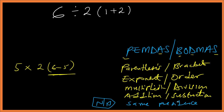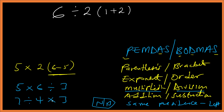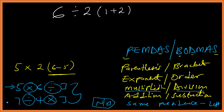Same precedence means: for instance, if you have multiplication and division together — like 5 times 6 divided by 3, or 7 divided by 4 times 3 — you start from the left. Same rule applies when addition and subtraction appear together: start from the left.